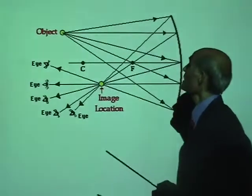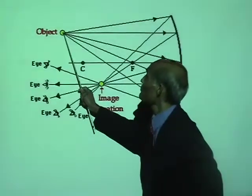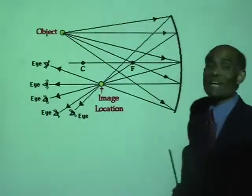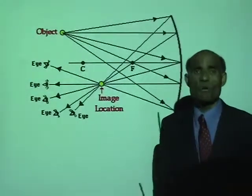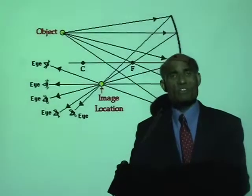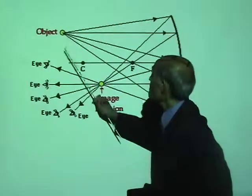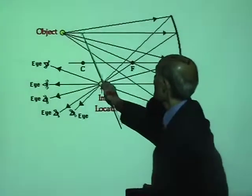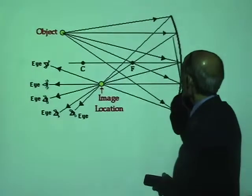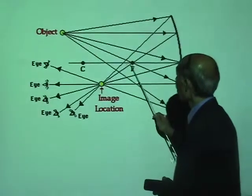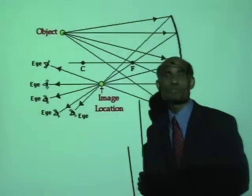Here I have the picture of how the image of an object is formed. Look at some of the light rays I have chosen. Remember my definition of principal focus — a light ray that is parallel to the principal axis, after reflection, will go through a point on the principal axis. That point is called the principal focus.